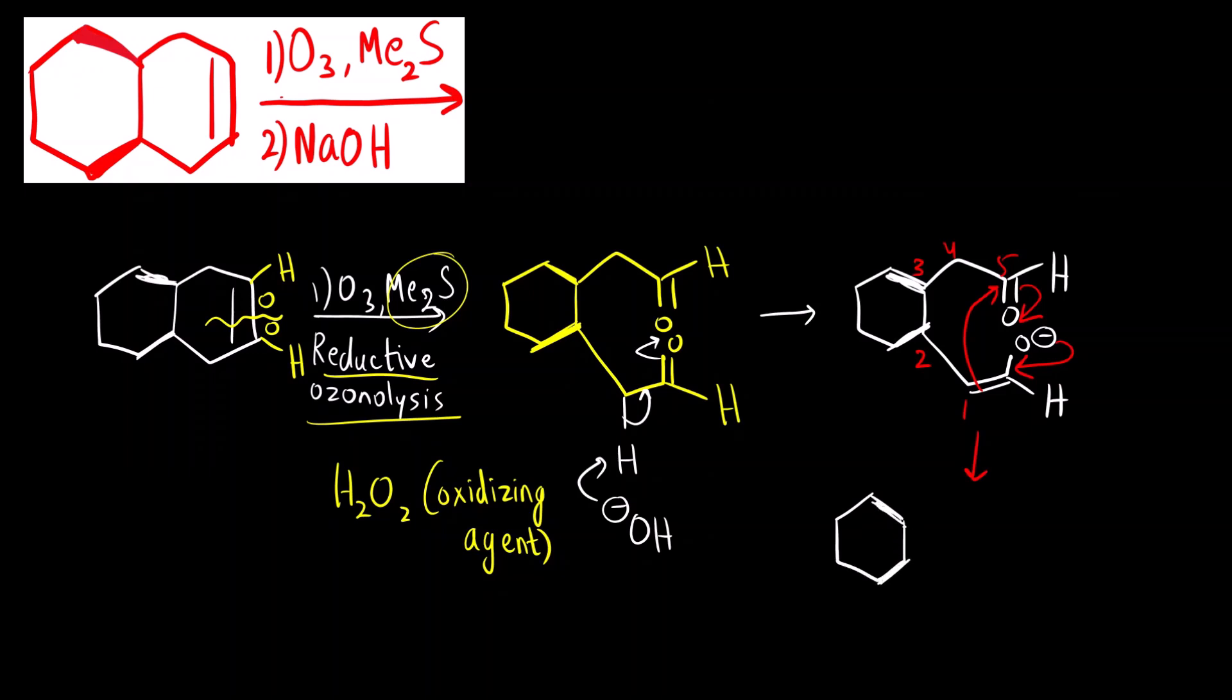This is above the plane, above the plane. 5 membered ring is formed. So 1, 2, 3, 4, 5. First position, you can see here we have aldehyde, C double bond O H.